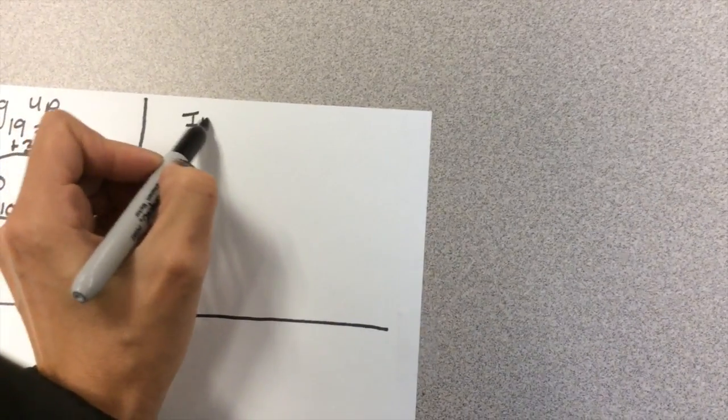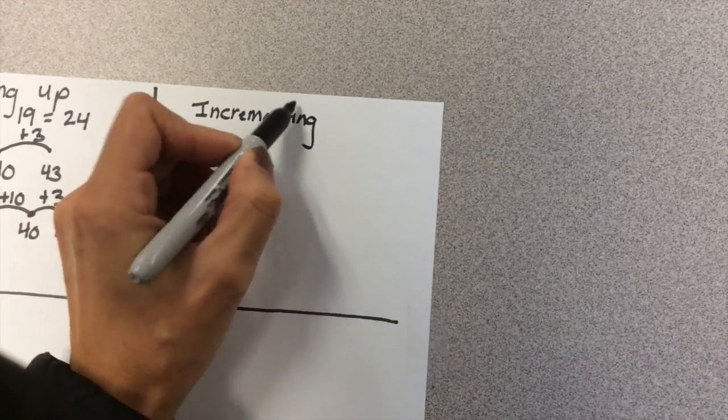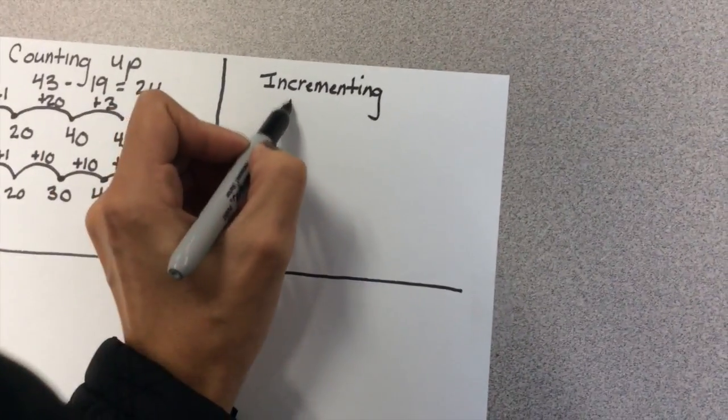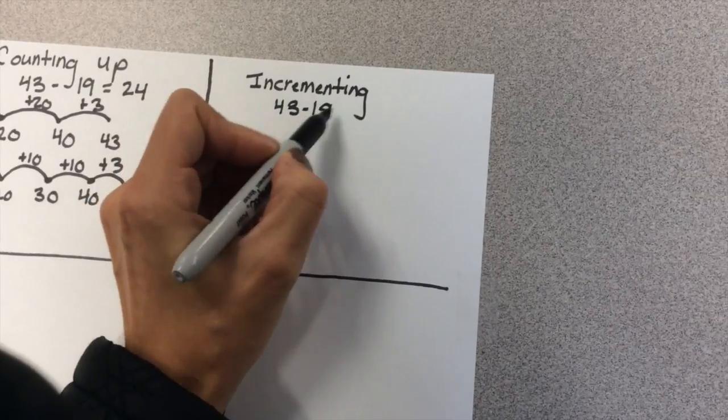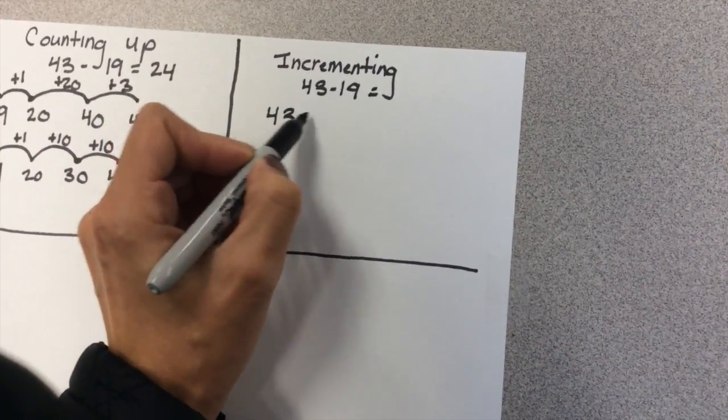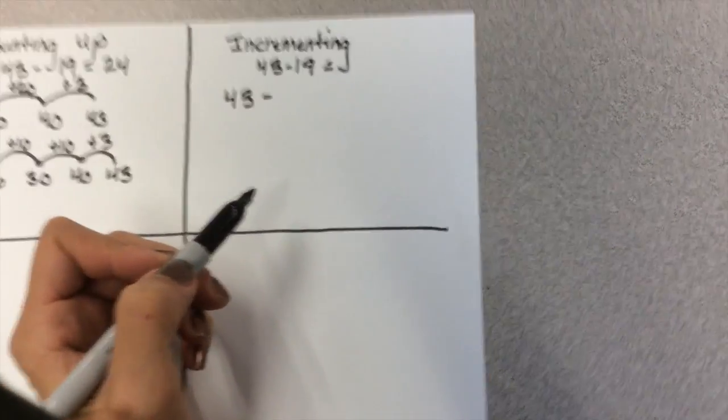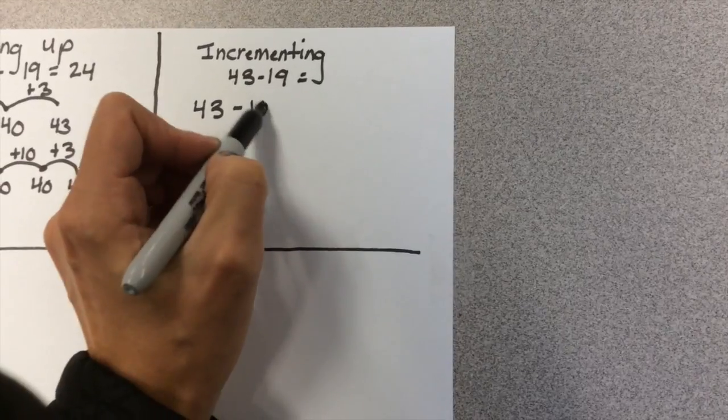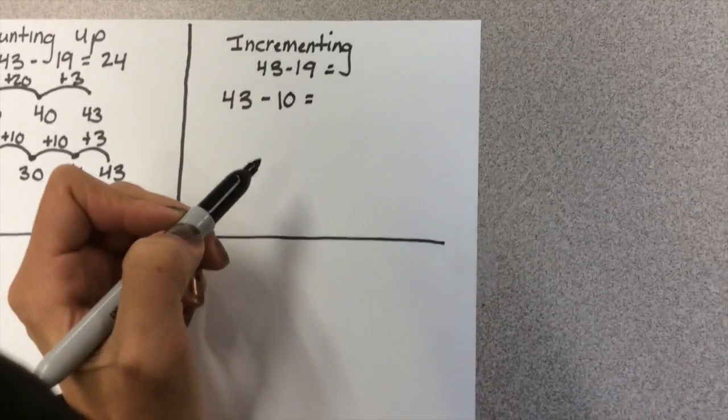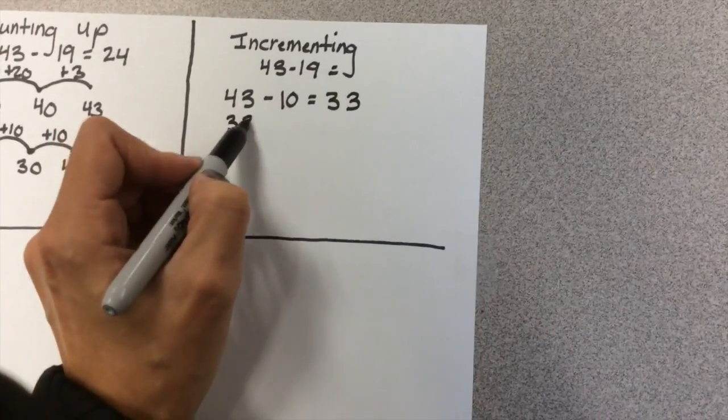The next strategy is called incrementing: 43 minus 19. For this problem, we start off with 43, and we think to ourselves, can I pull a friendly number out of that 19? So I'm going to pull out 10. So 43 minus 10 is 33. And then from 33, I still have another 9 I have to pull out.